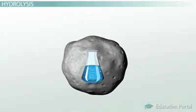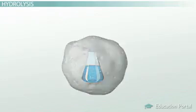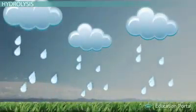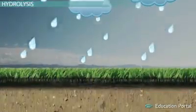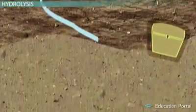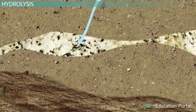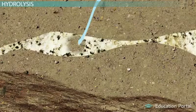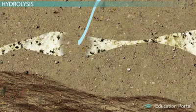The most common example of hydrolysis is feldspar, which can be found in granite changing to clay. When it rains, water seeps down into the ground and comes in contact with granite rocks. The feldspar crystals within the granite react with the water and are chemically altered to form clay minerals, which weaken the rock.